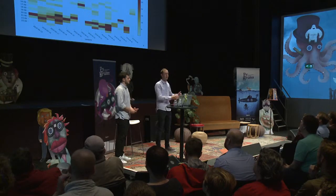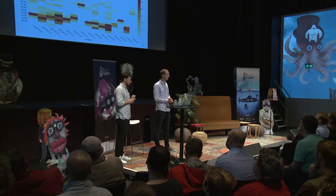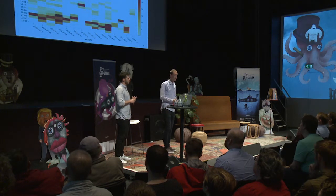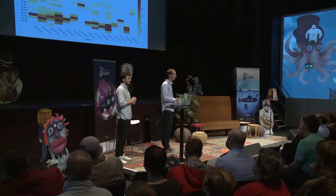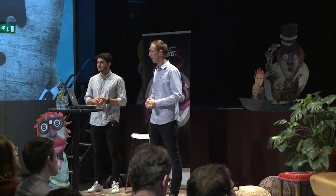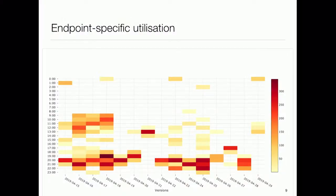The page I just showed was an overall graph. This is endpoint-specific — for a certain endpoint you can see when its peak times are, when it's used often, and when it's not. That can help you decide whether to scale your web services during peak times.